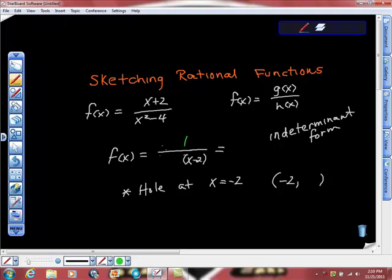And then I'm going to evaluate this because I want to know what this y value is now. So I put in negative 2 here, and I get negative 2 minus 2 is negative 4. So we have a hole at the point negative 2, negative 1 fourth. And it's really important that at the end of our graphing, we go back to that.